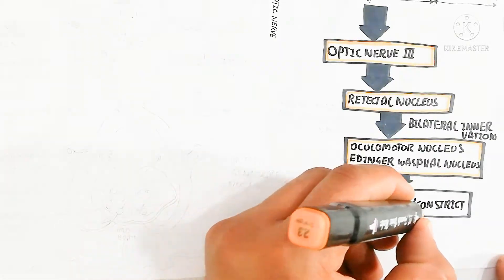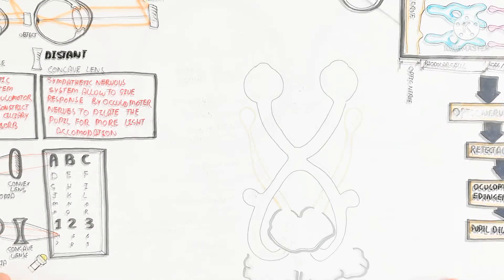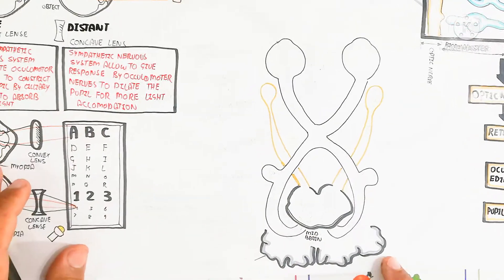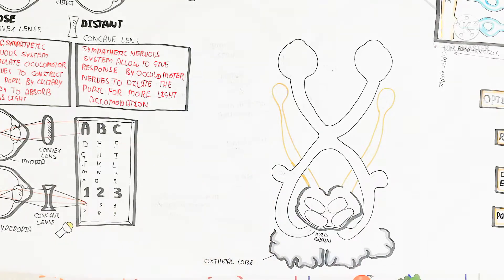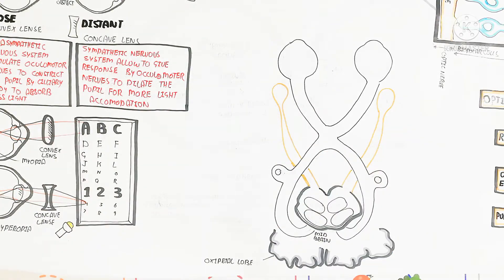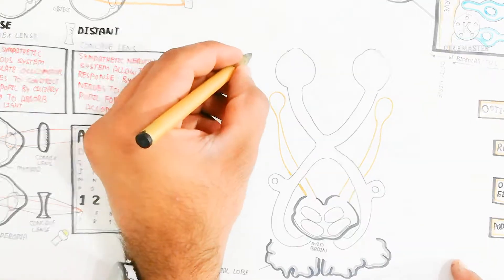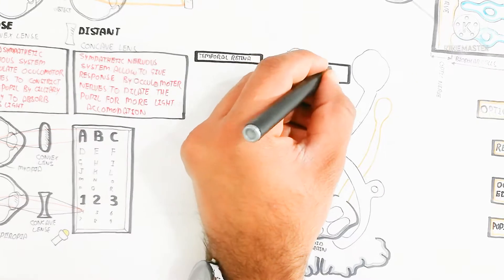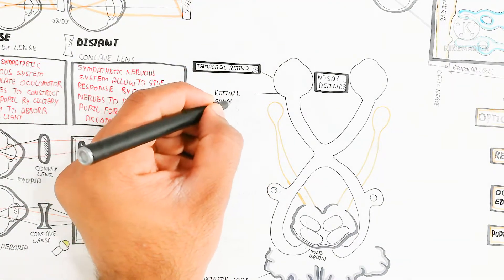Now we will discuss the light reflex pathway. Here are the pair of eyes, which are complex eyes containing a single lens rather than the multiple lenses of compound eyes in arthropods. There are two types of nucleus — one in the occipital lobe and one in the midbrain — and here is the lateral geniculate nucleus. The nasal retina is used for the nasal visual field, while the temporal retina is used for the temporal visual field.